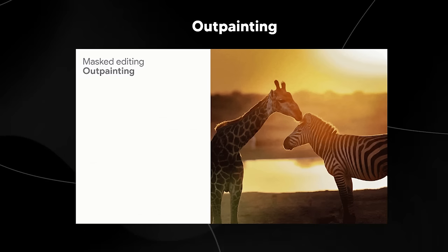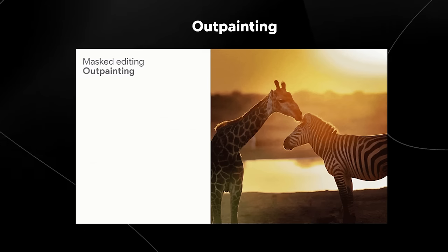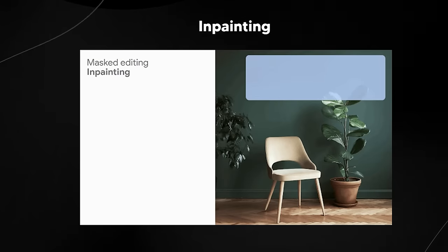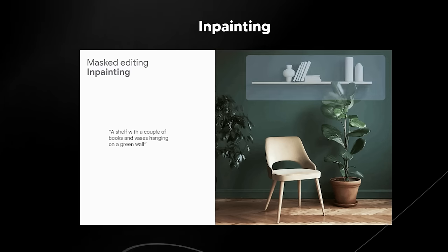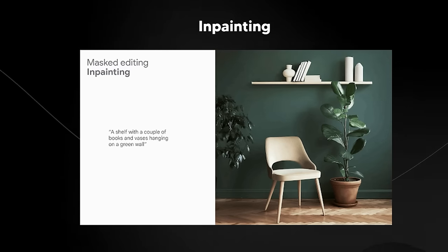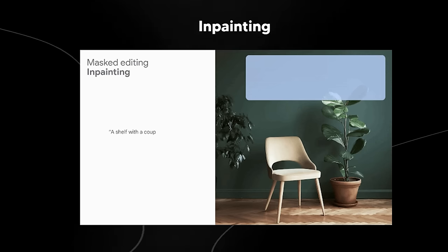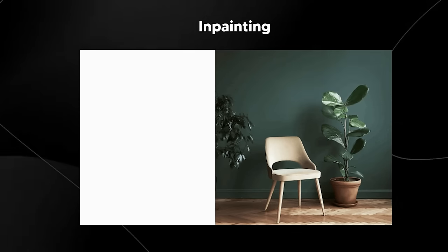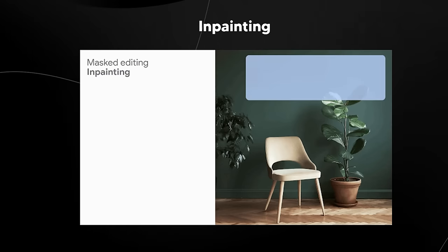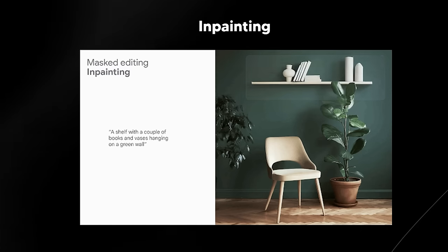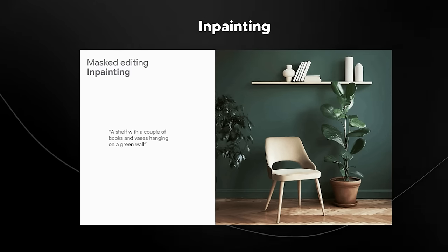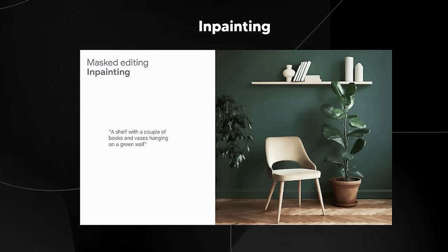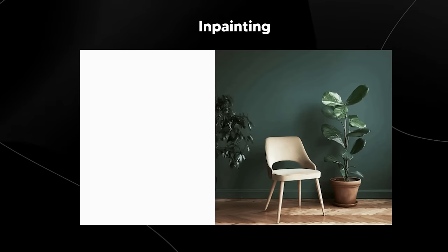This will likely be better implemented in Google because of how they've made the software. They also included inpainting — if you want to add something to an image. In this example, they wanted to add a shelf and it looks pretty cool. The prompt was: 'a shelf with a couple of books and vases hanging on a green wall,' and they managed to add that right into the image. It's essentially like Photoshop's generative fill.